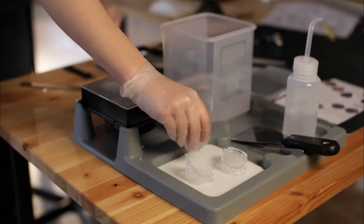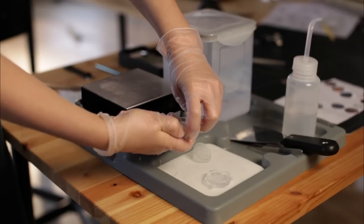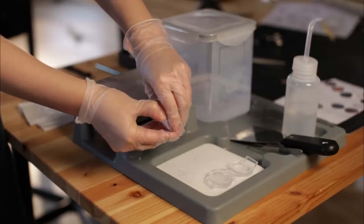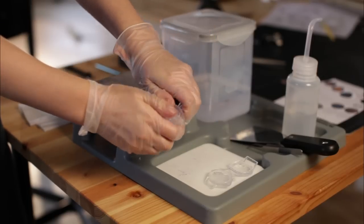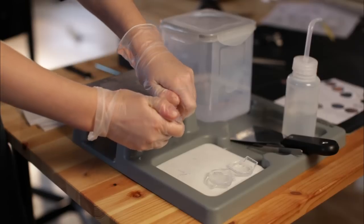Then remove the supports by pulling them away from the part. For very delicate features, you might want to break the supports more carefully using tweezers or a small pair of clippers.